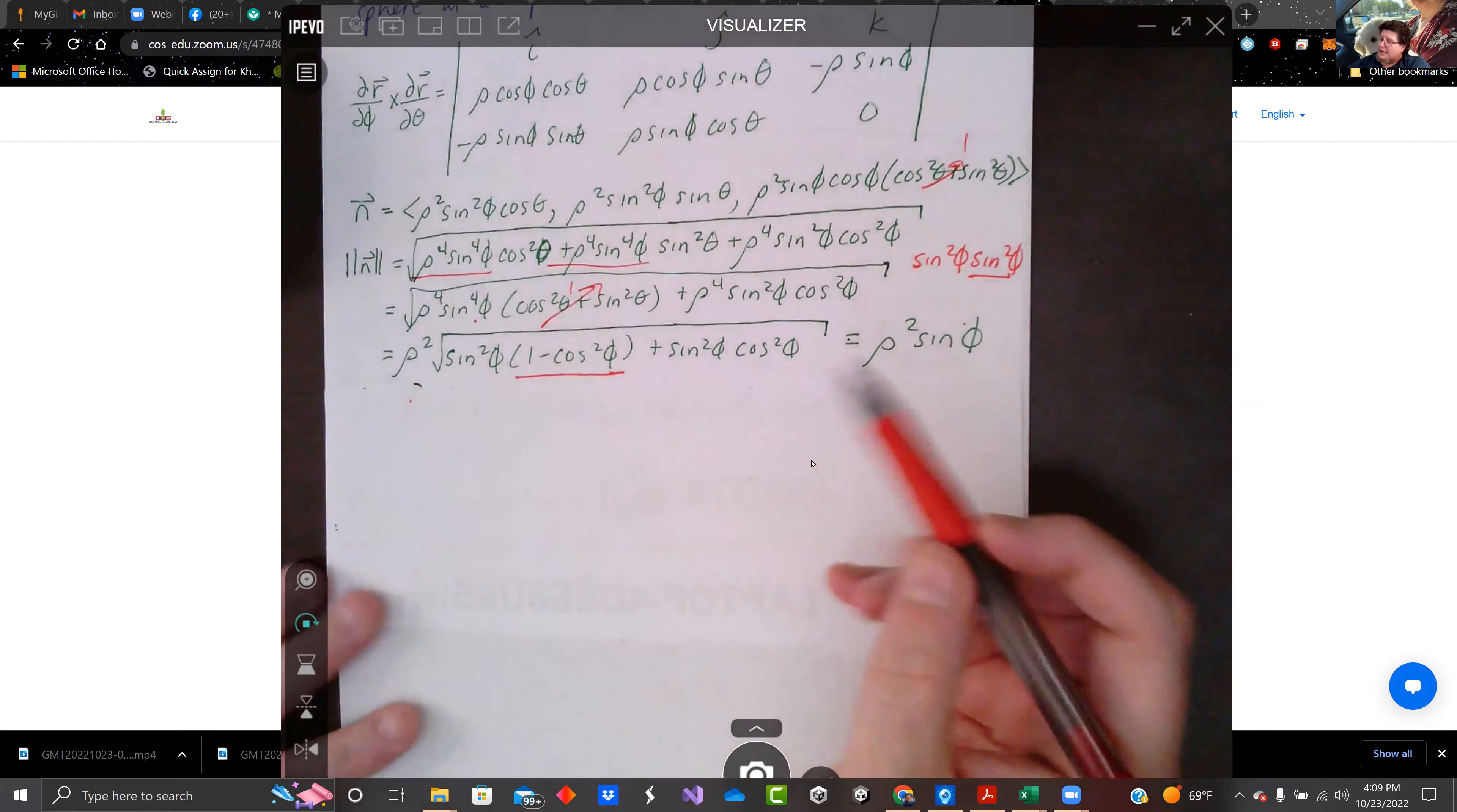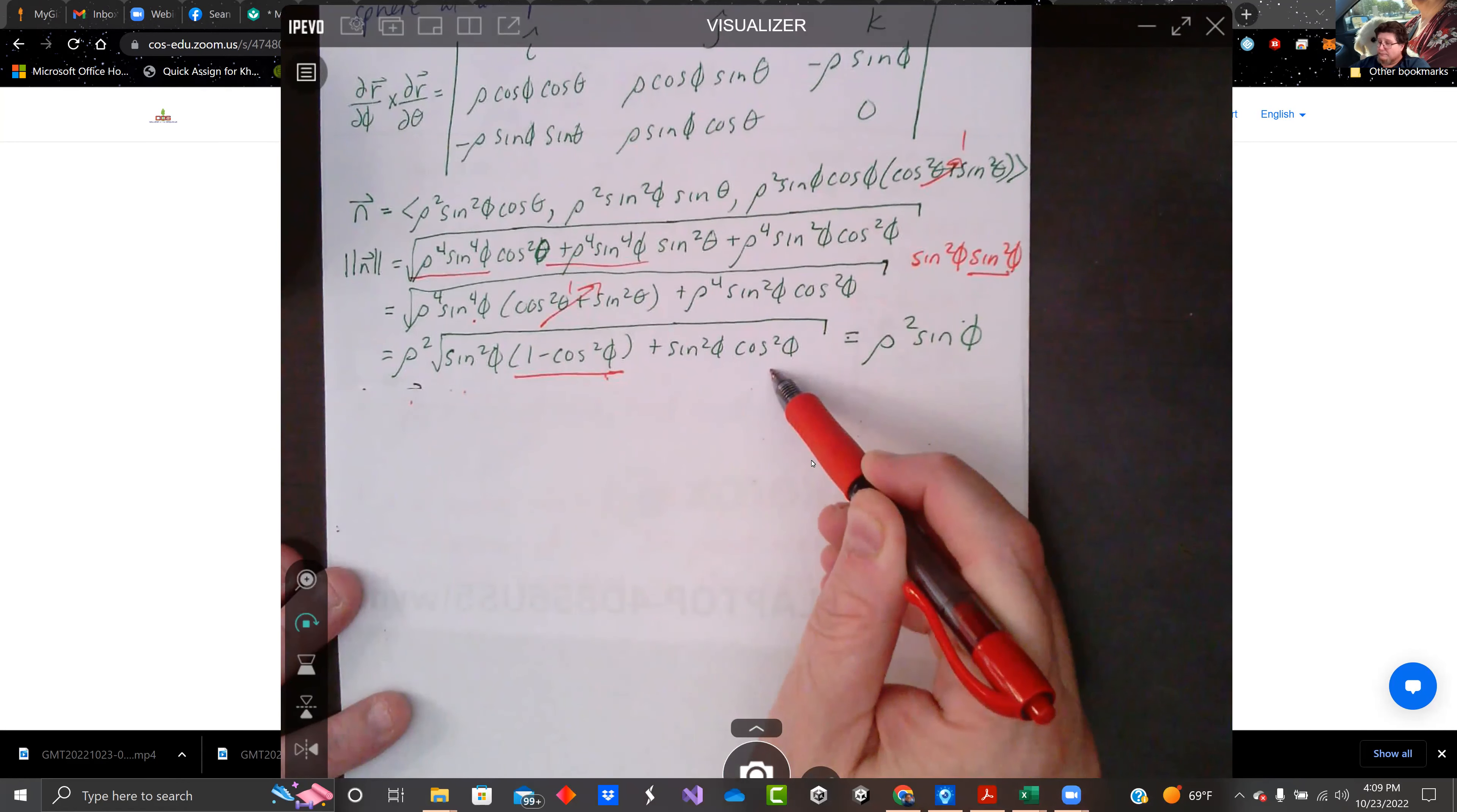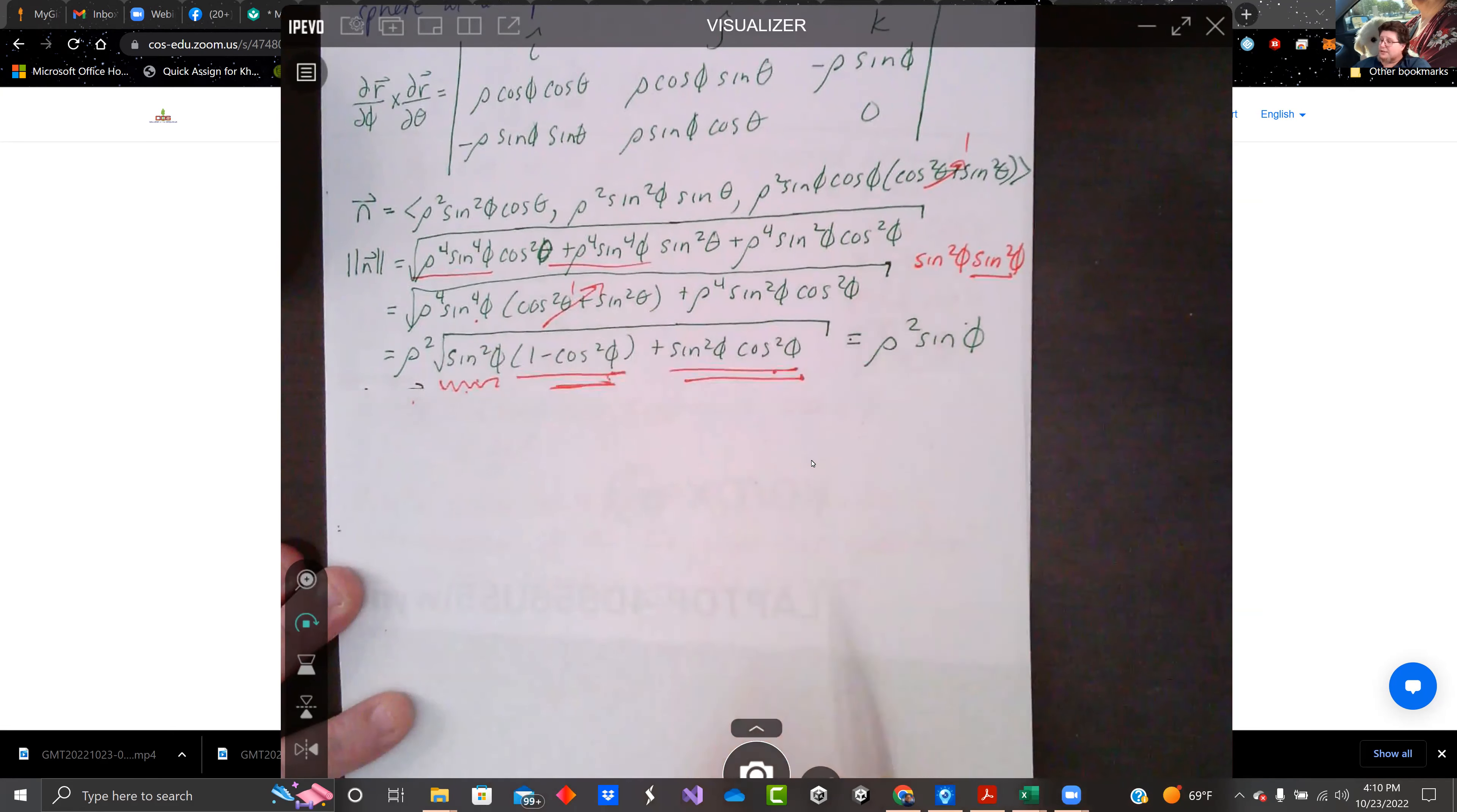You'll see when you clean this up, we've got a sine squared phi cosine squared phi that is negative. Cancels out this one. So we're just left with the square root of sine squared phi. So this part right here, and that cancels that, and we're just left with this one. Square root of sine squared phi. We've got rho squared sine phi.